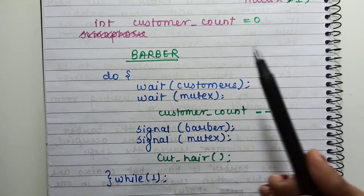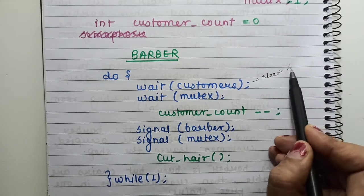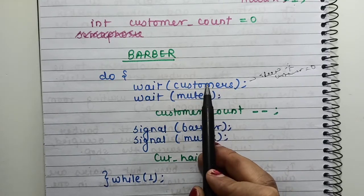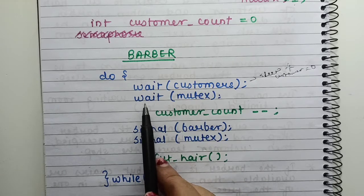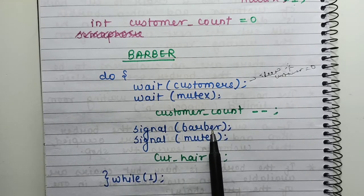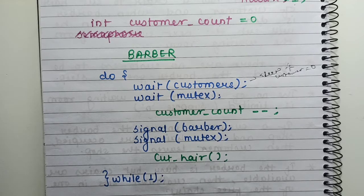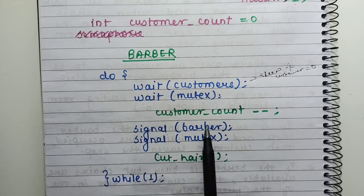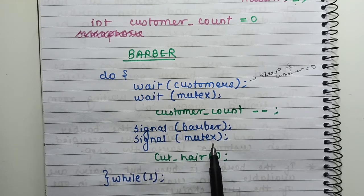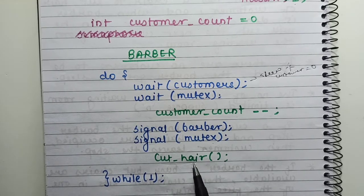For the barber process: if no customer is coming, the barber will sleep when customer count is zero. When the barber gets a customer, it calls one customer from the waiting room and waits on mutex. It then decrements the customer count, signals the barber semaphore — meaning the barber is now awake — and then signals mutex. After that, the barber performs the haircut.